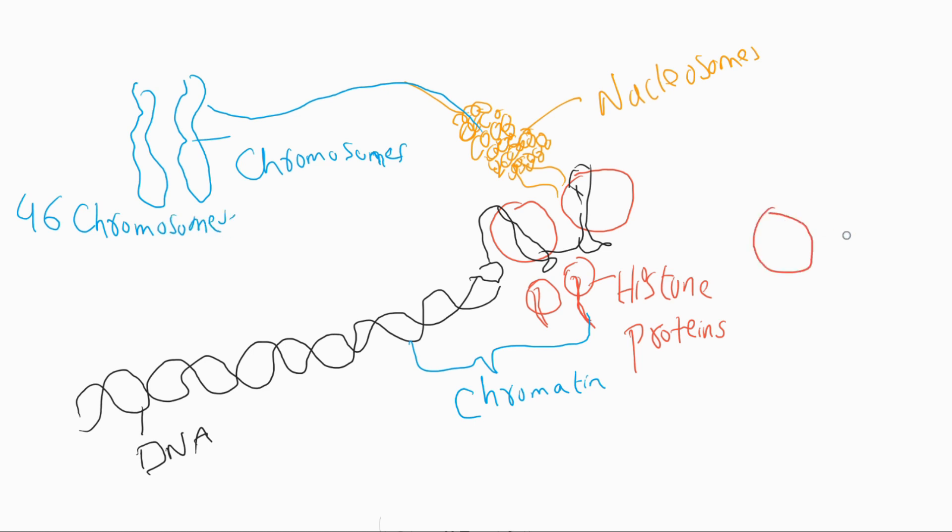Histone proteins are octomers which are composed of two components of each protein: H2A, H2B, H3, and H4. This is the structure of histone proteins.